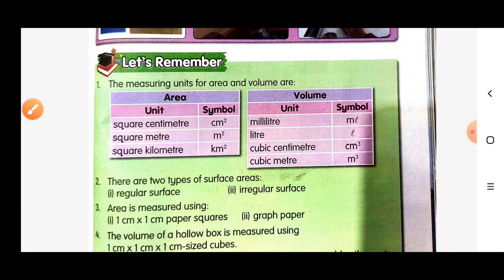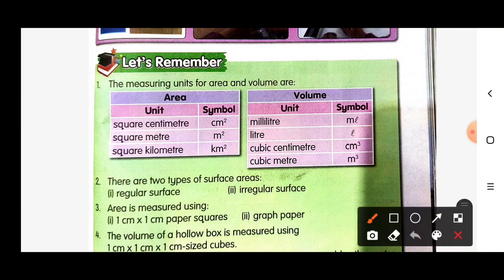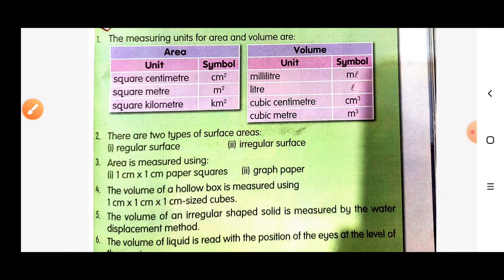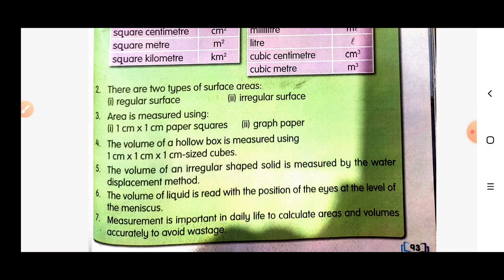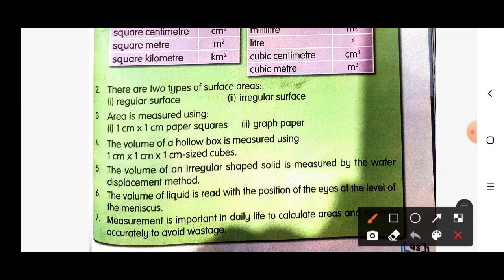There are two types of surface area: regular surface and irregular surface. Area is measured using a 1cm × 1cm paper square and also graph paper. The volume of a hollow box is measured using a 1cm × 1cm × 1cm size cube. The volume of an irregular shape solid is measured by the water displacement method.